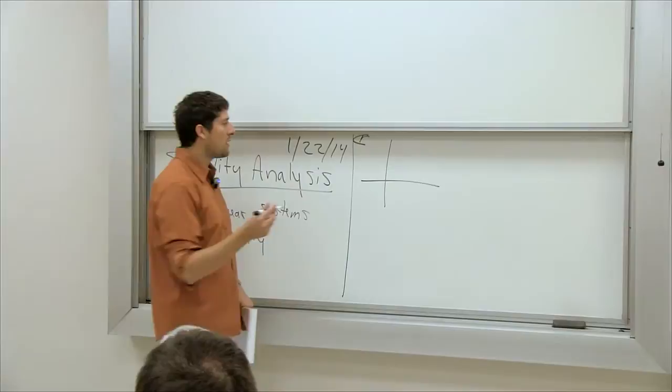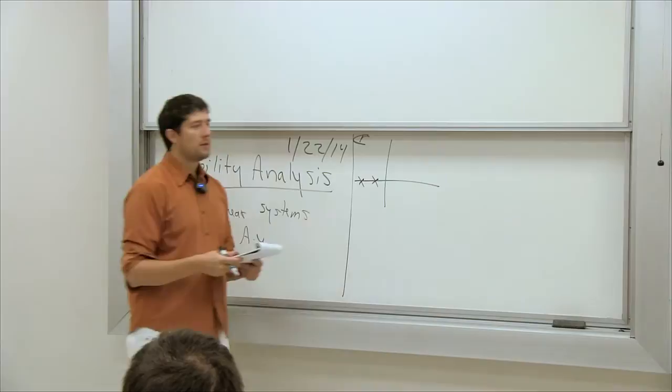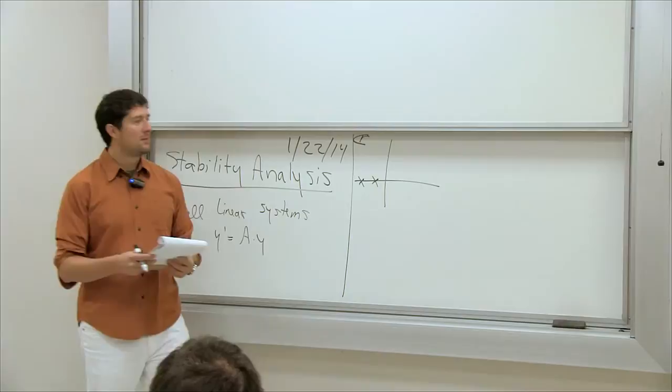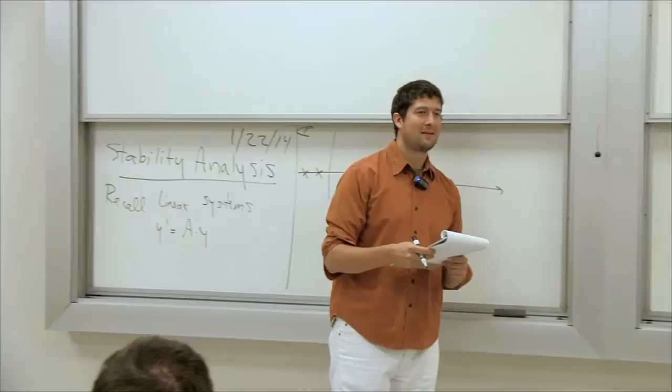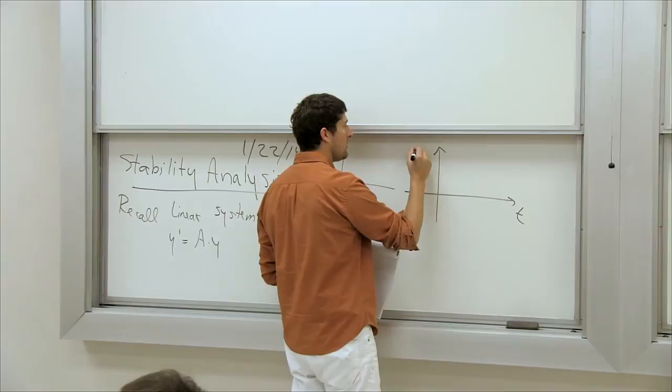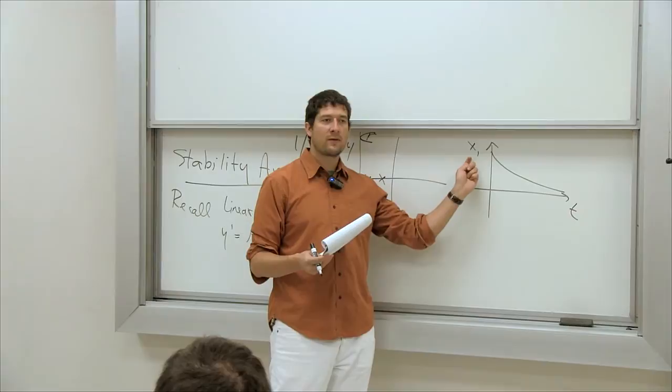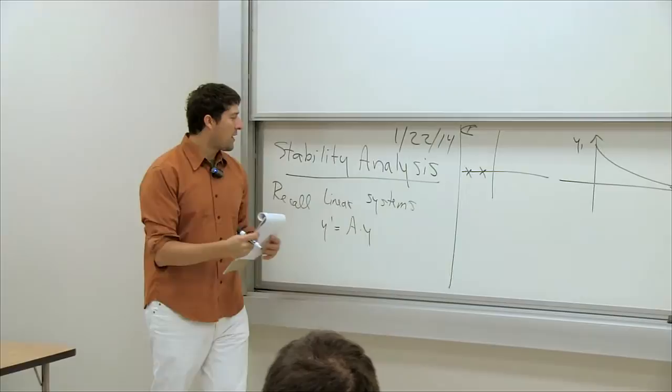The eigenvalues are all in the complex plane. Suppose the eigenvalues are, say, minus one and minus two in a two-dimensional system. The typical solution decays to zero over time. There are two variables, y1 and y2, and you can plot them separately. They're both part of the same solution y(t) with two components, and they both go to zero over time.